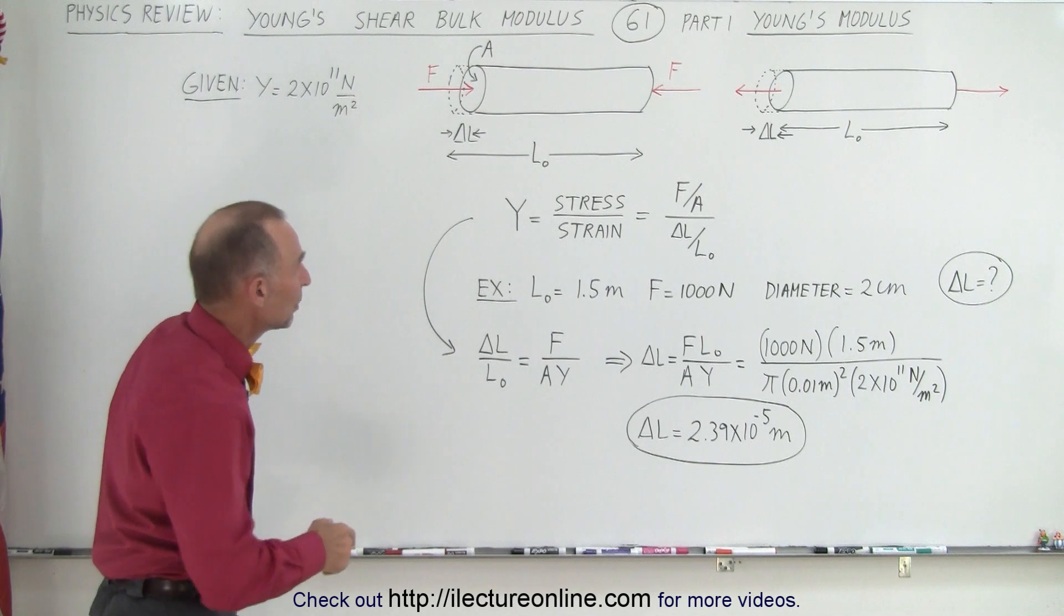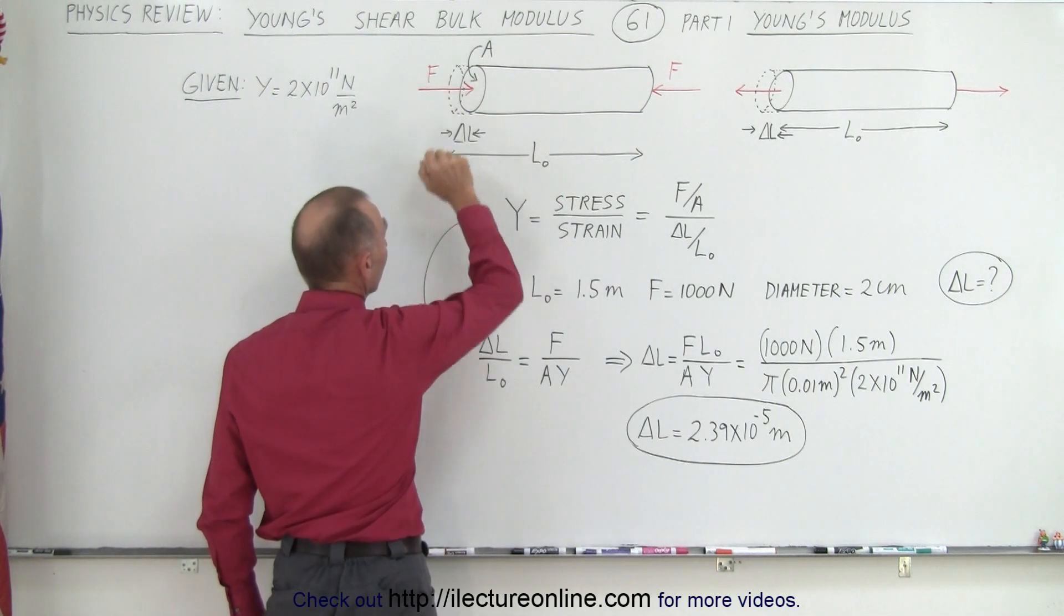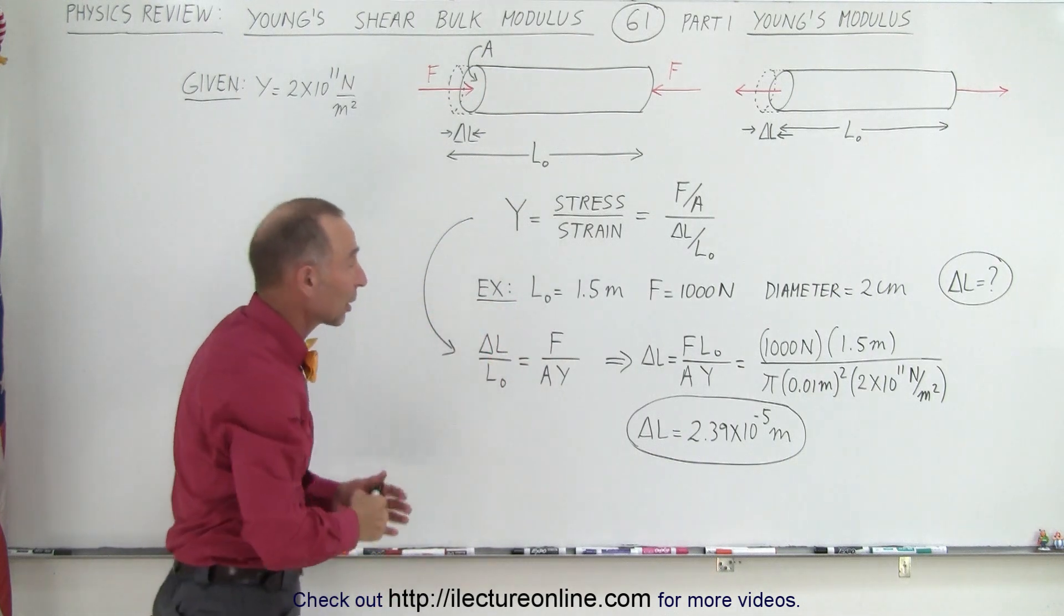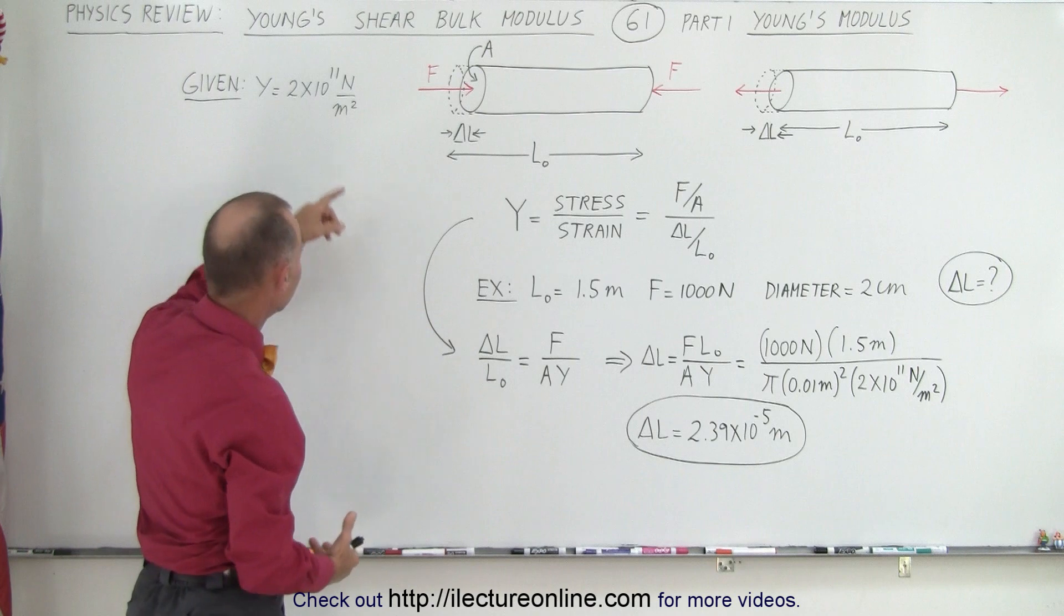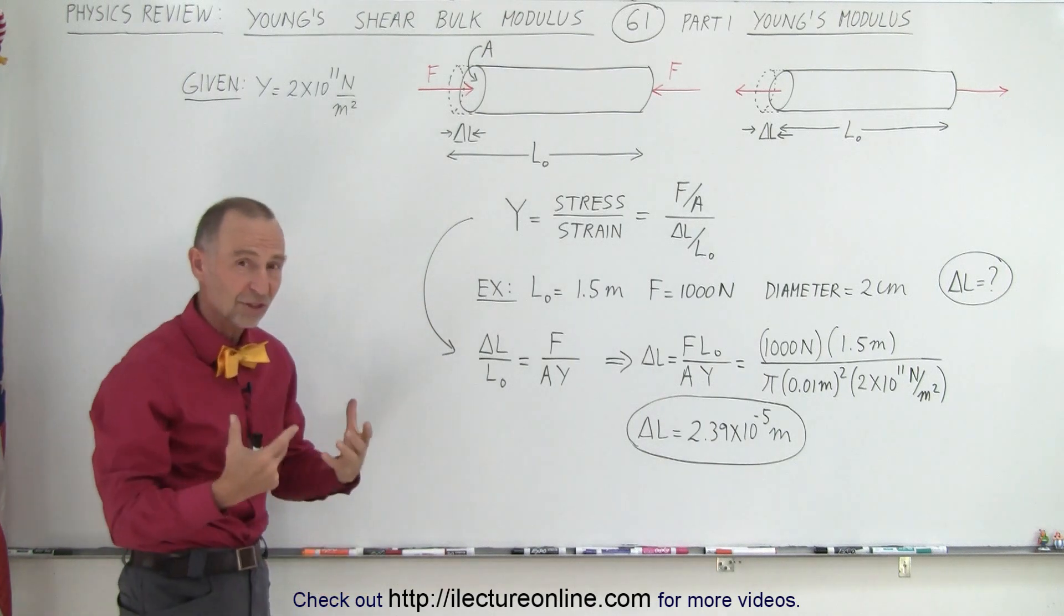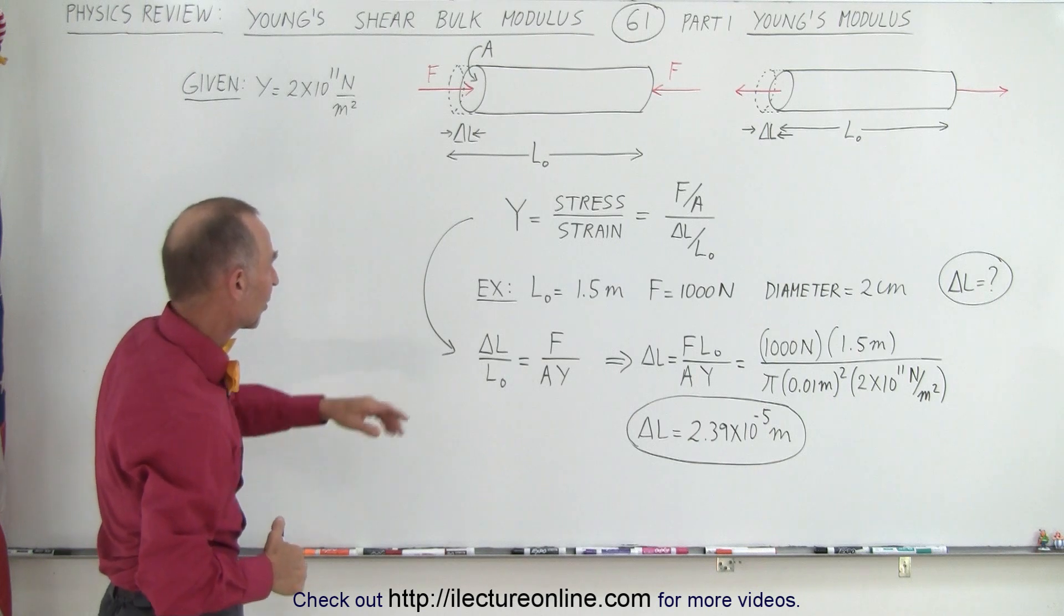What we need to know is the original length of the object, the cross-sectional area of the object, what the object is made out of so we can look up on the table and see what the Young's Modulus is for that particular object. I believe this is the Young's Modulus for steel.